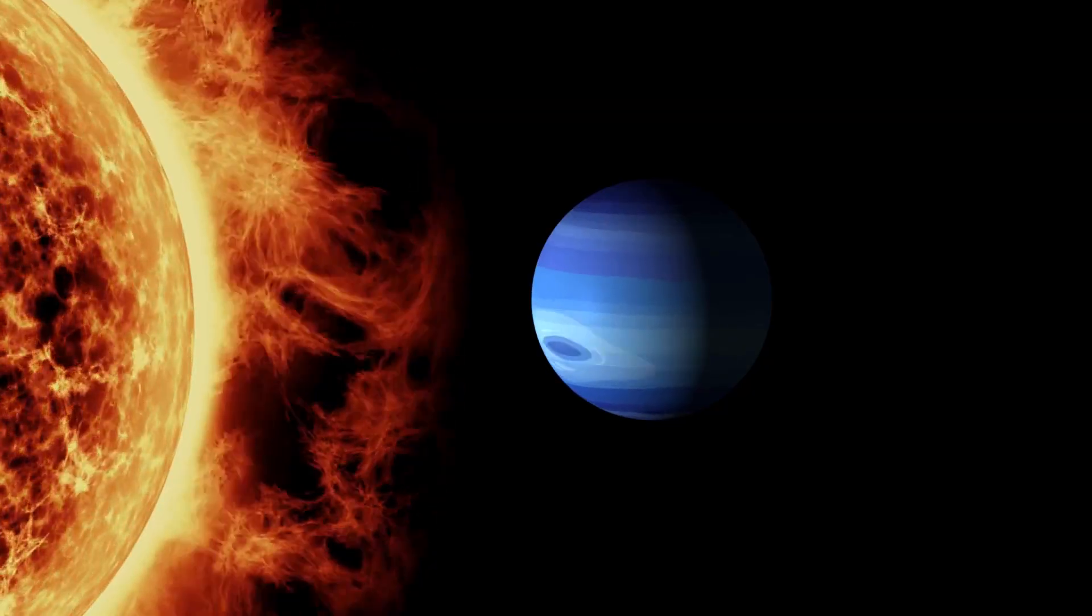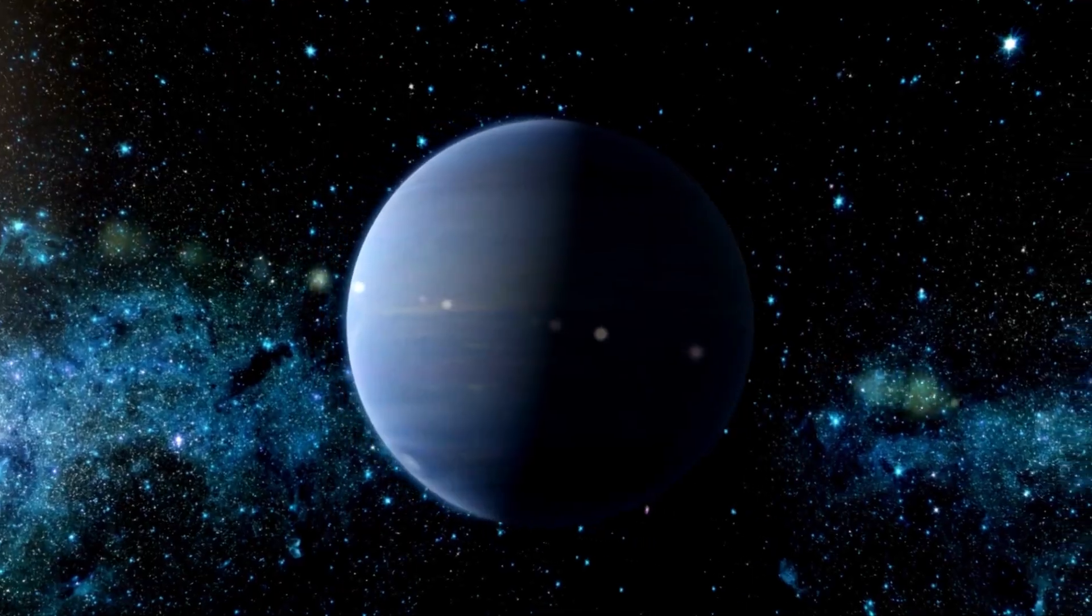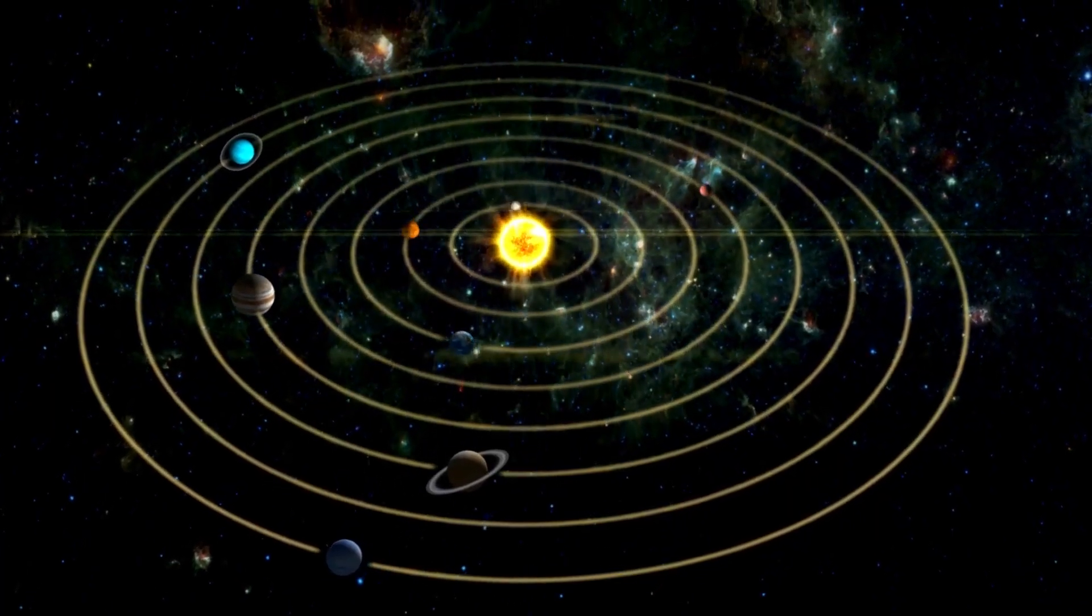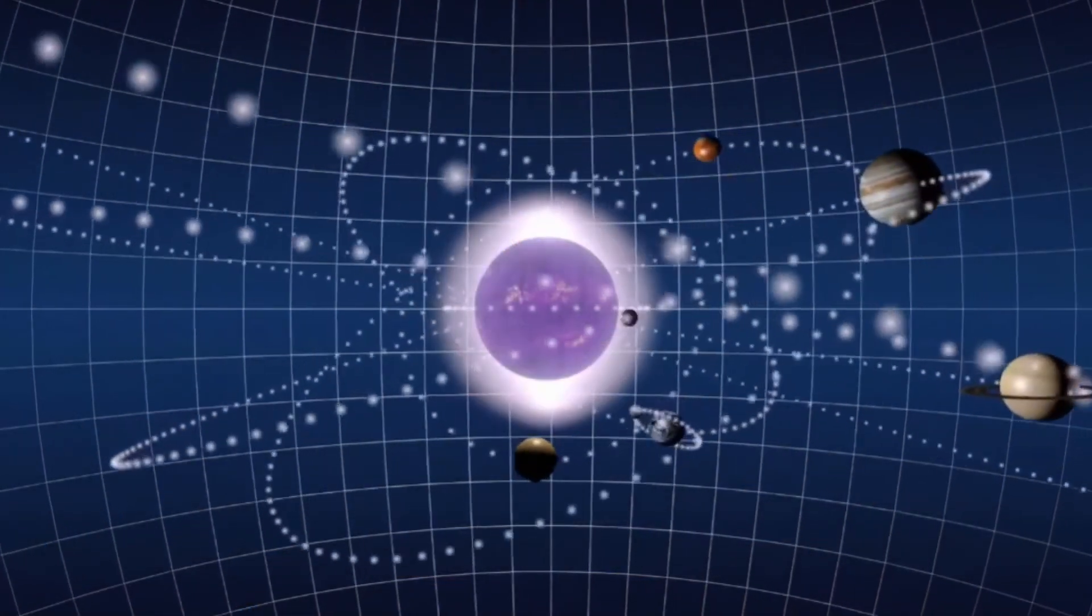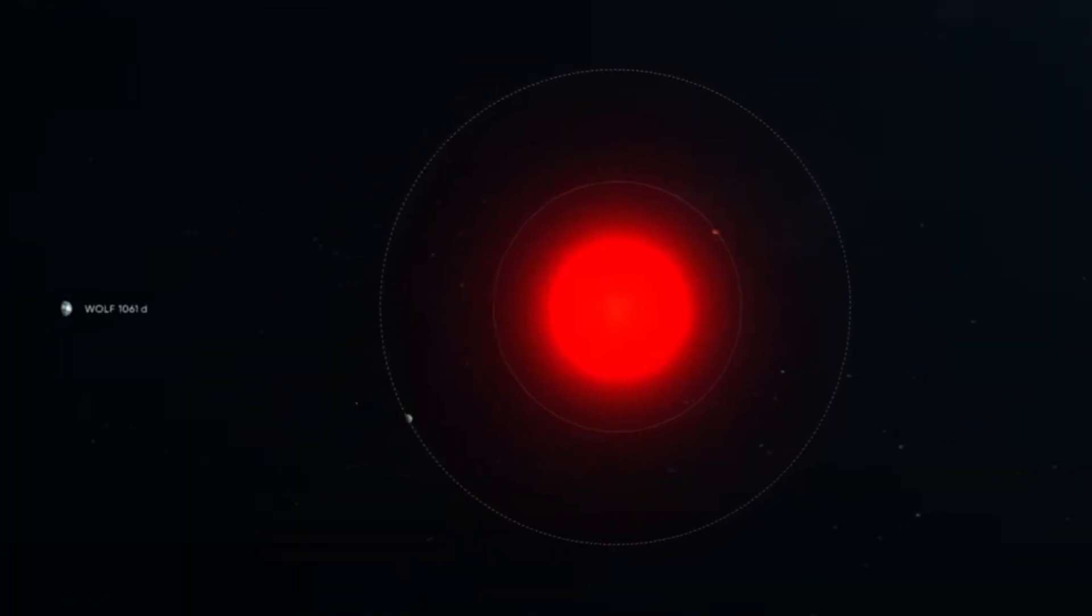With that kind of distance, it takes sunlight a staggering four hours to reach Neptune. Around 4.5 billion years ago, Neptune emerged from the process that created the entire solar system. Its genesis involved the gravitational attraction of scattered dust and gas, aggregating to form the colossal planet we recognize today.